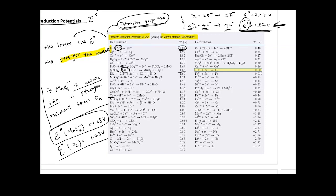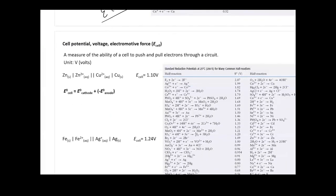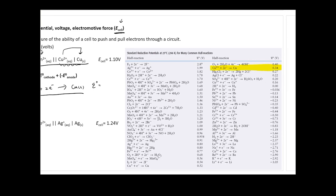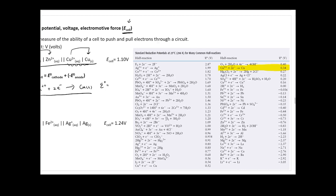The larger the standard reduction potential, the stronger the oxidant. When we look at cell potentials, we put two half-reactions together to form an electrochemical cell. To calculate the overall potential of the cell — typically called E cell — we look at the cell notation where zinc becomes Zn2+ and Cu2+ becomes copper. For the cathode, Cu2+ gains two electrons to form copper solid, which is a reduction reaction, giving E0 = 0.34 volts.